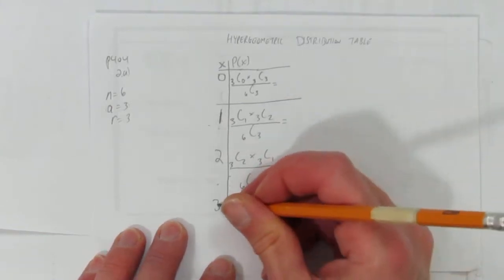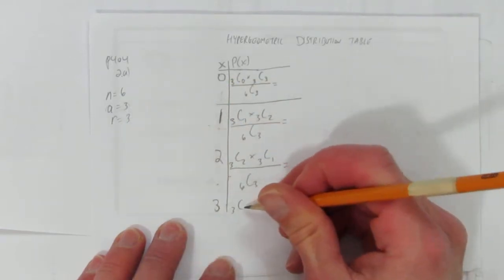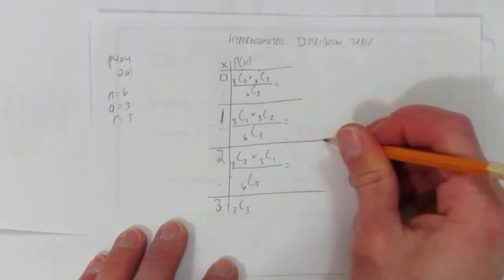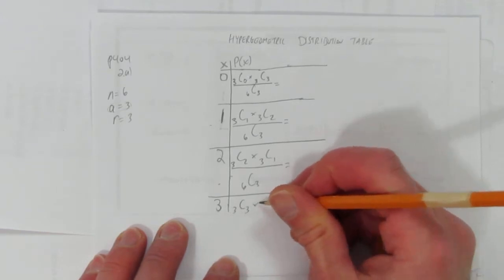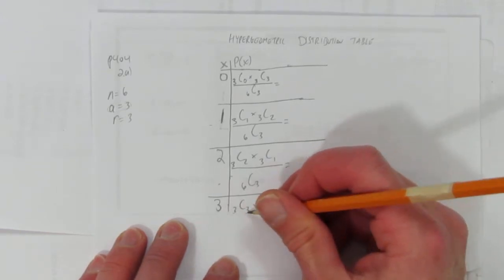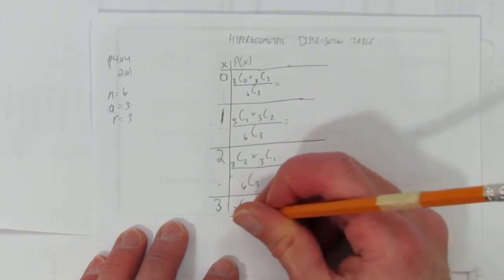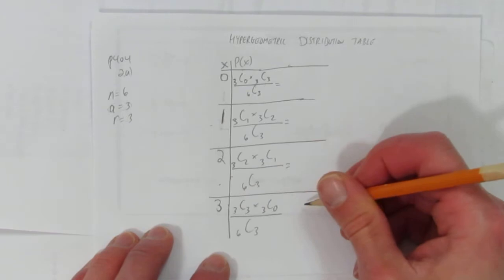And finally 3 successes - that is we got 3 of the 3 things we want - that's 3 choose 3, let's put a line here to separate those, times 3 choose none of the things we don't want over 6 choose 3 total ways to choose.